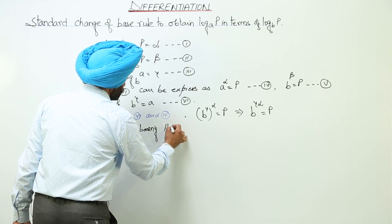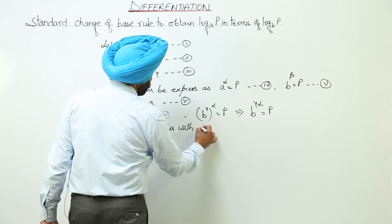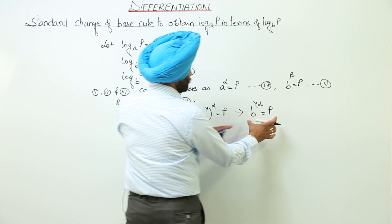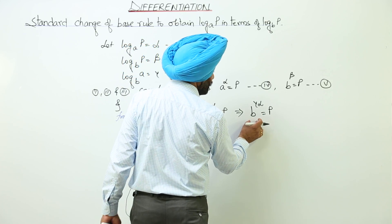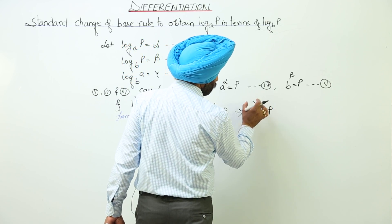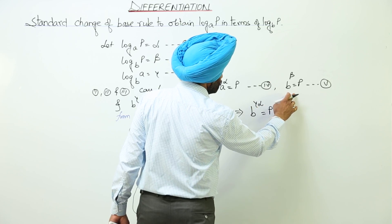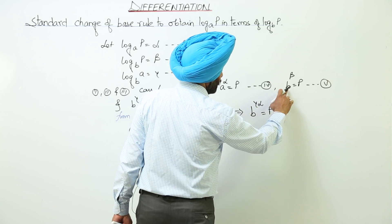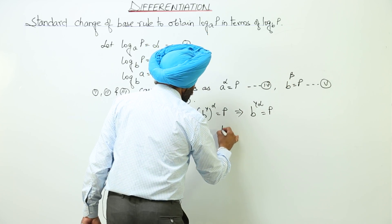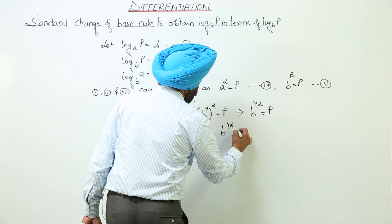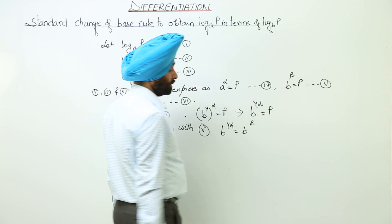Comparing this with equation 5. Now comparing this one and this one. Here b to the gamma alpha equals p and here b raised to power beta equals p. So we can write b to the gamma alpha equals b to the power beta.